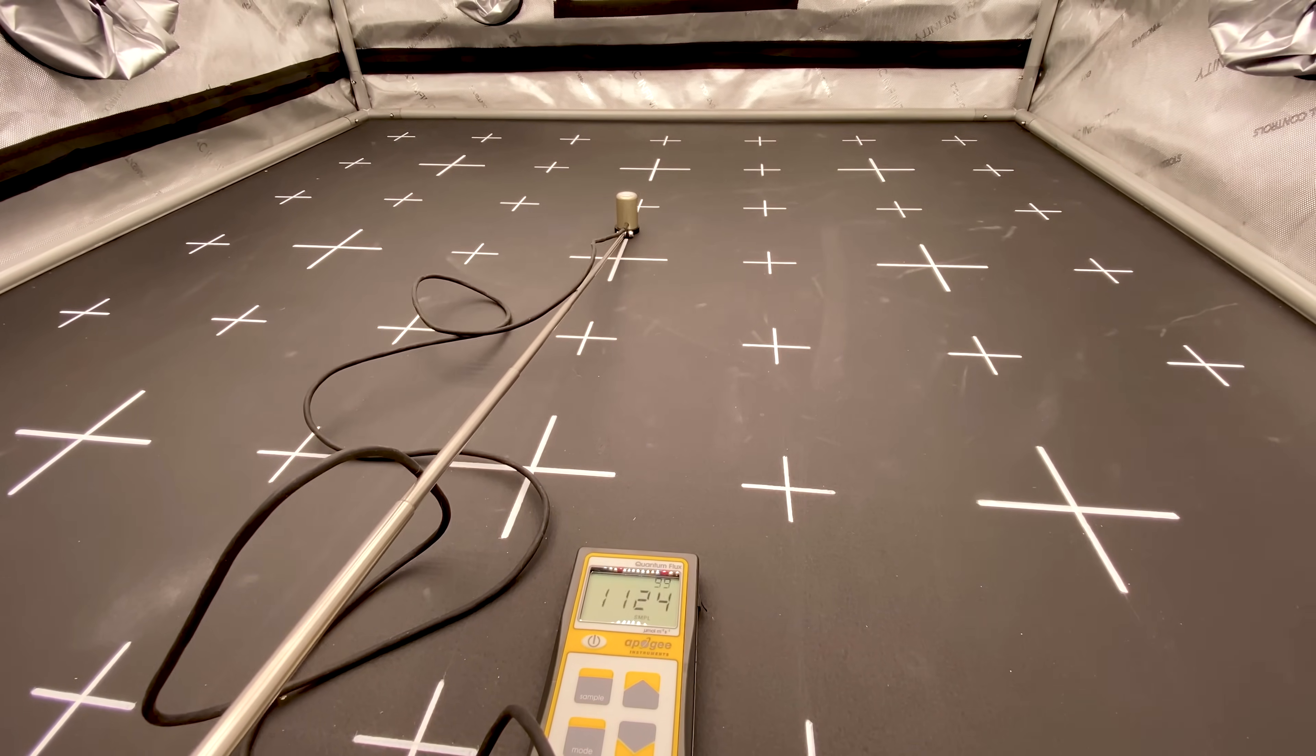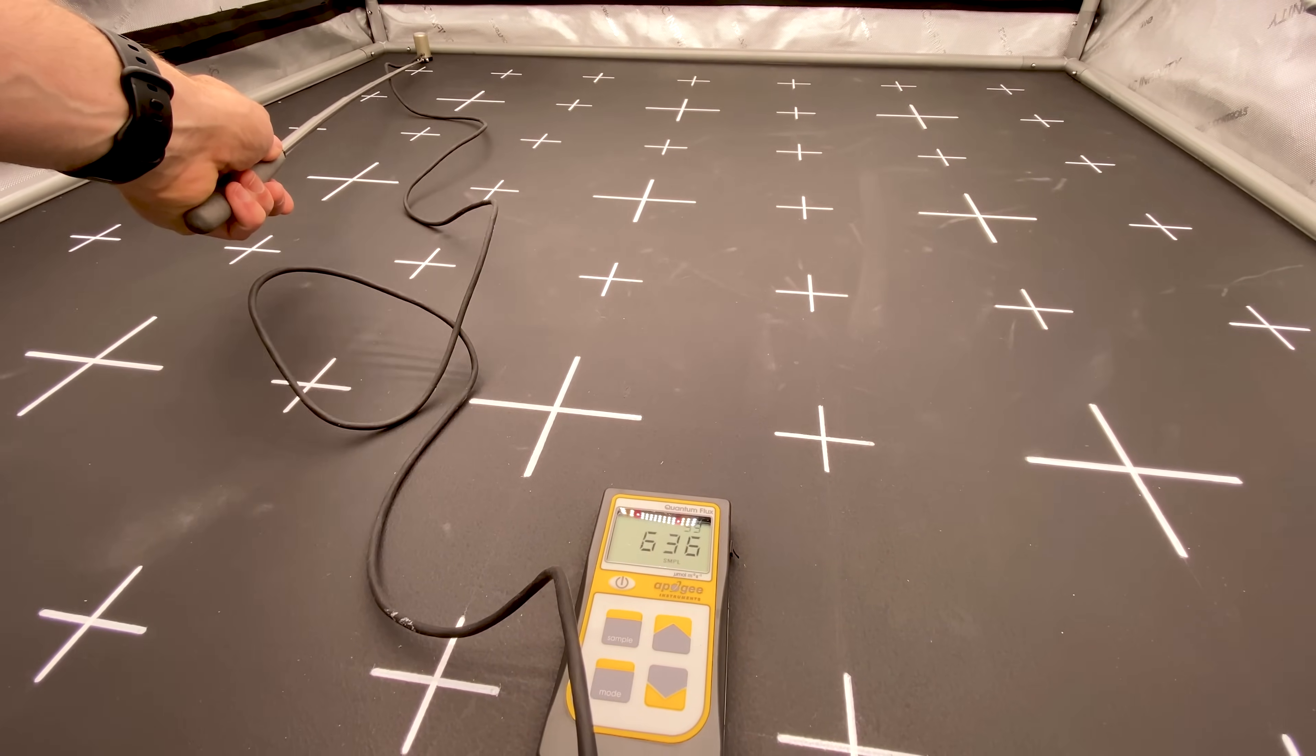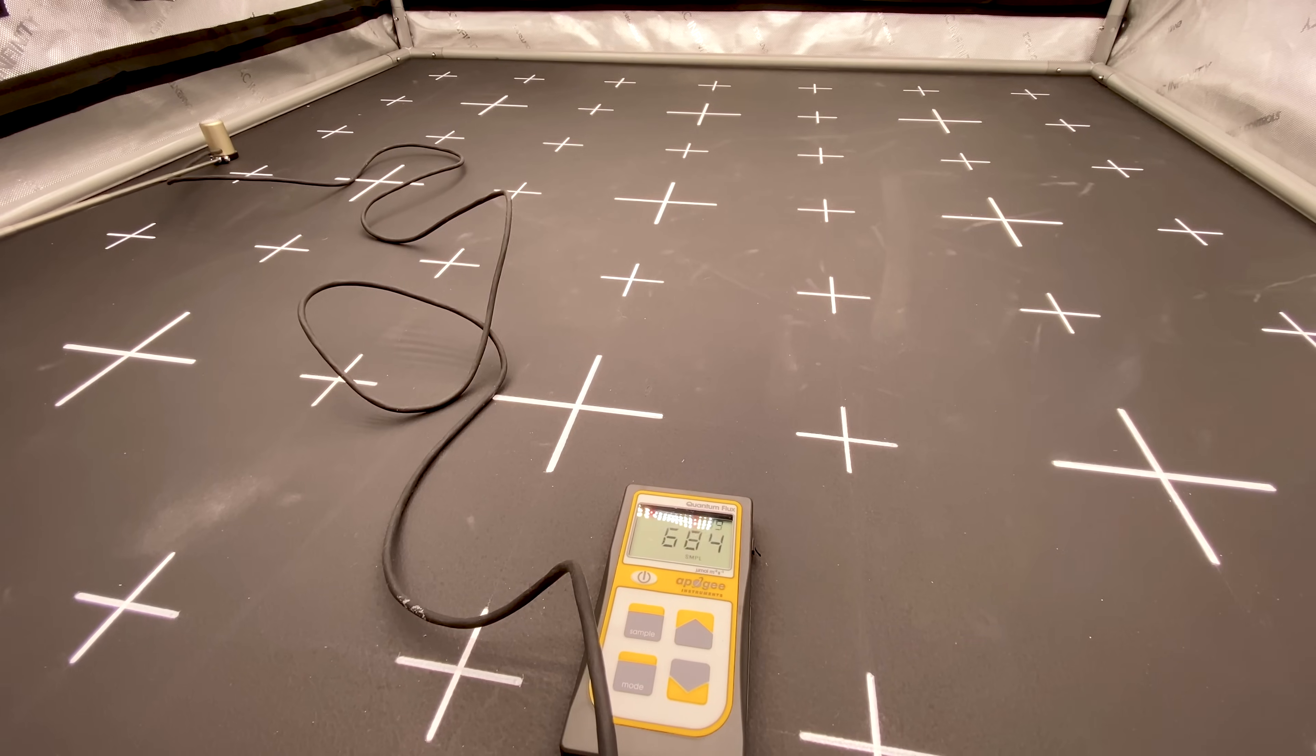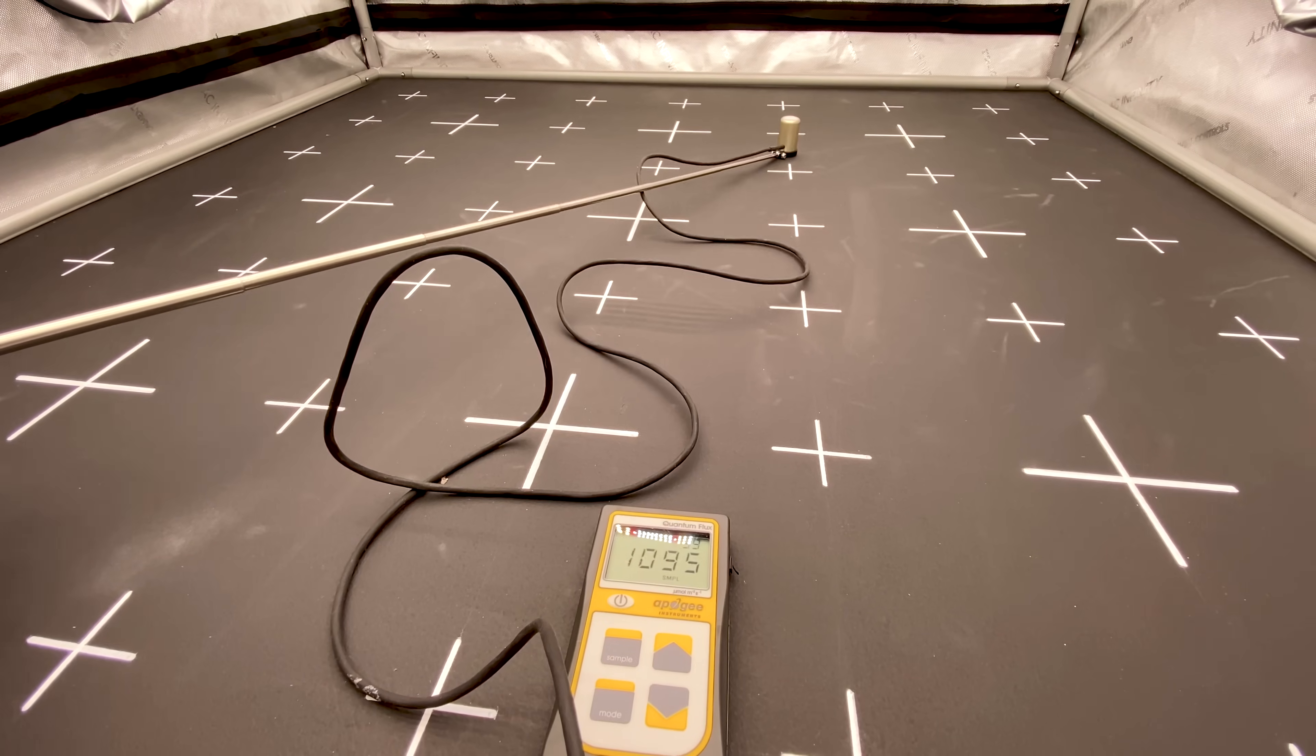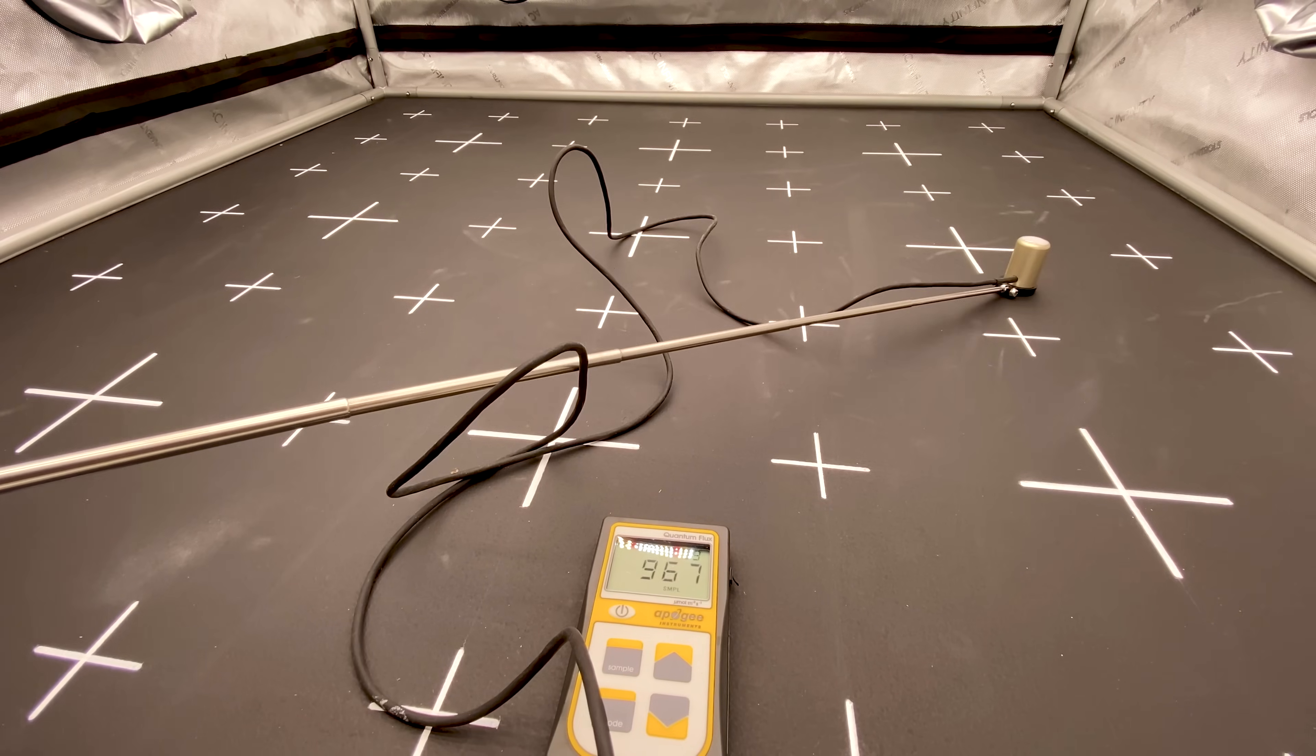Alright, next reading at 24 inches, over 1100 PPFD in the center. Moving to the back, about 800. Corners, about 525 and this other side, just under 700. And back to the center and moving it around, you can see that it's probably around 900 in most of the places. Moving towards the center gets to about 1000 PPFD.